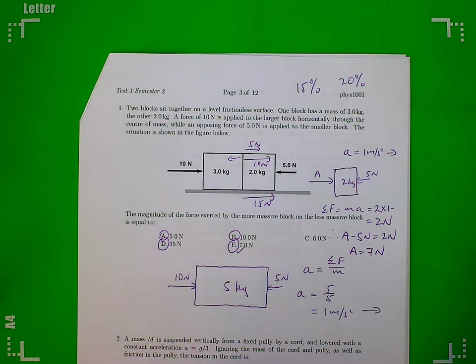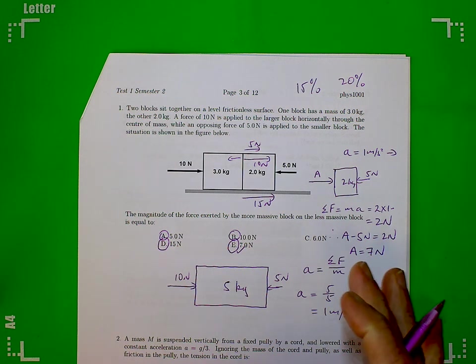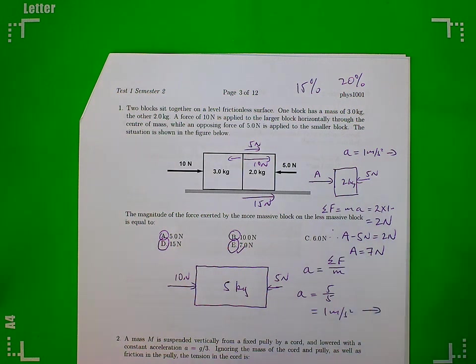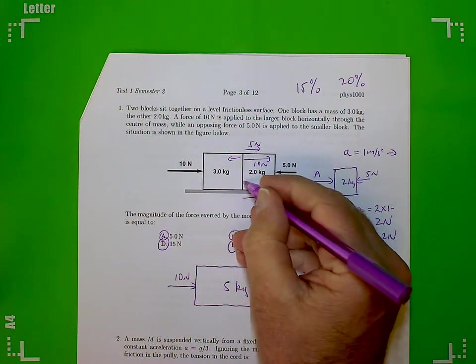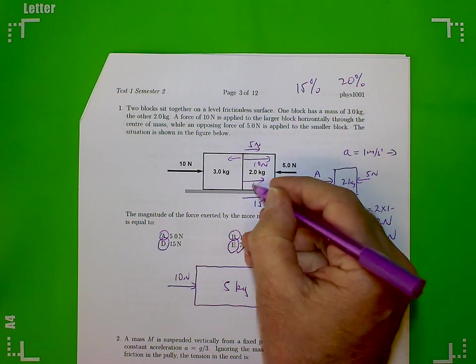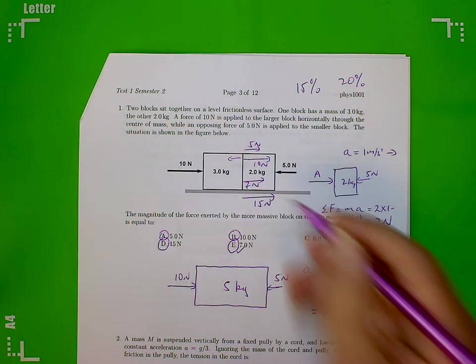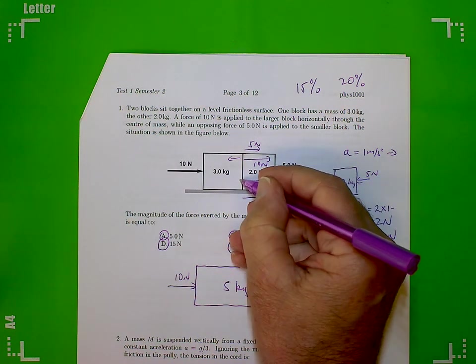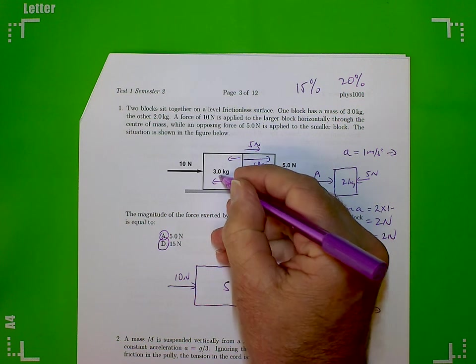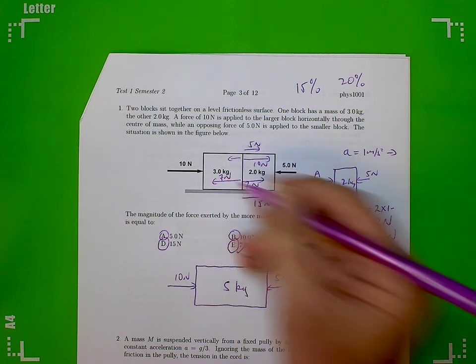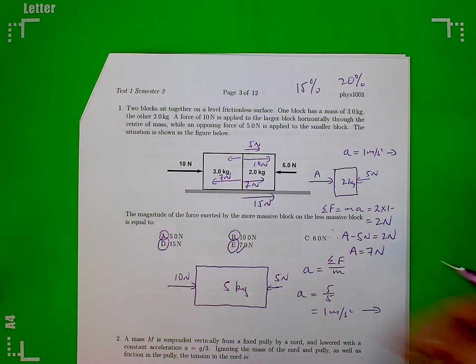Seven newtons is the actual answer. Now let's just do a double check using Newton's third law. Newton's third law says that if this block pushes with a force of 7 newtons on that block there, then the 2 kilogram block will push back with an equal and opposite force of 7 newtons on it.